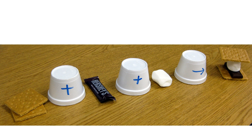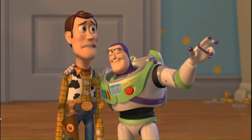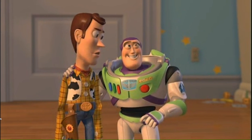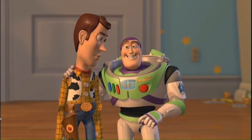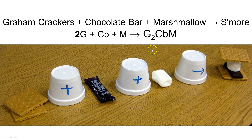Let's use this to take a look at an example of some s'mores. Graham crackers plus chocolate bar plus marshmallow is how you make a s'more. However, you don't use one graham cracker, one chocolate bar, and one marshmallow. I'm going to simplify this out almost like a chemical equation: I need two graham crackers plus one chocolate bar plus one marshmallow to make my s'more.